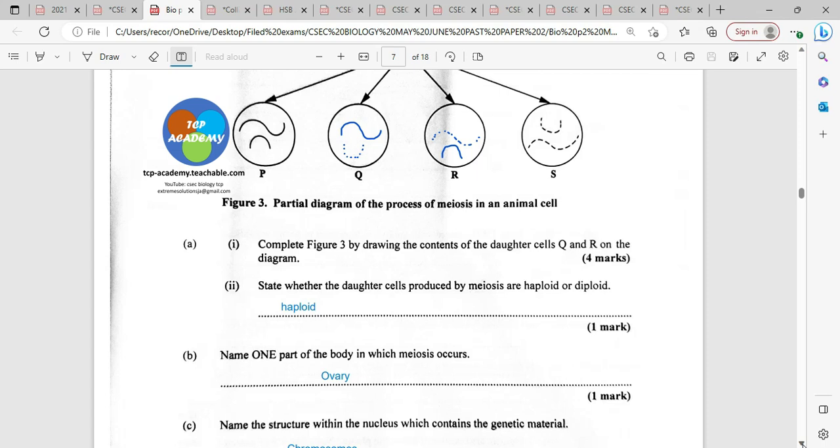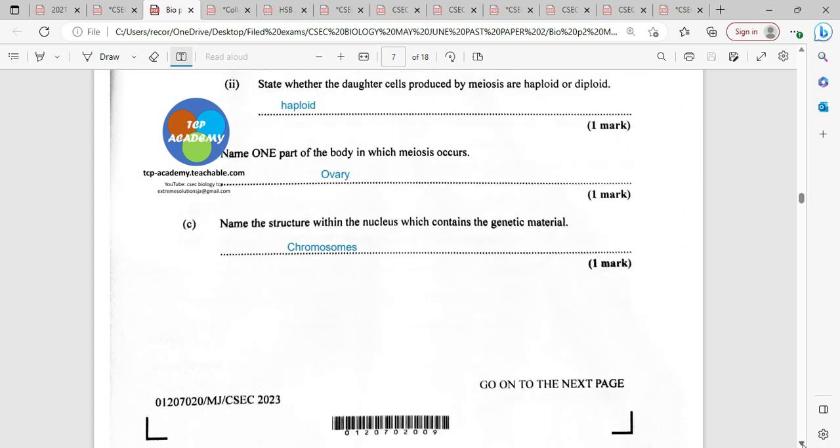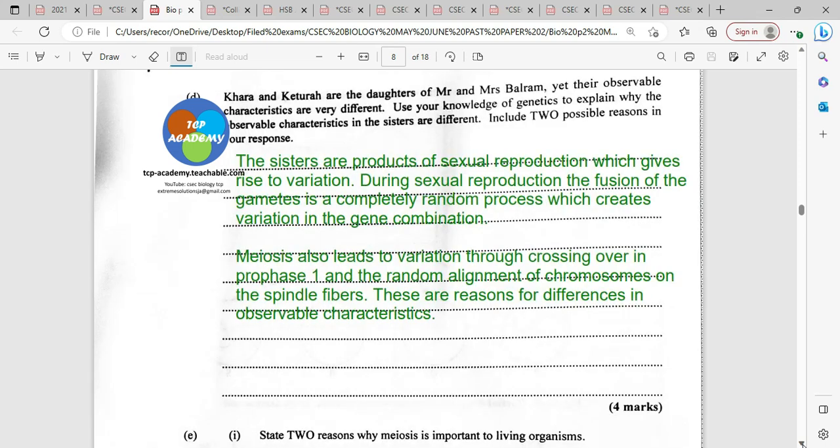Now name one part of the body in which meiosis occur. Of course, it is going to happen in the reproductive organs. So, of course, meiosis is taking place here in the ovary as eggs are being produced. Name the structure within the nucleus which contains the genetic material. That's going to be the chromosome. This is pretty nice here.